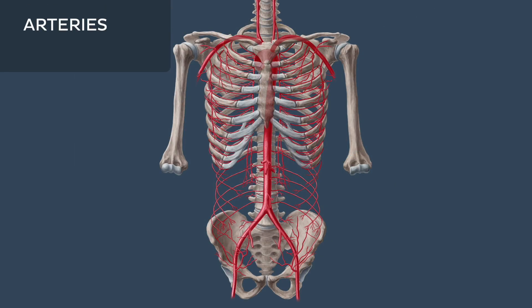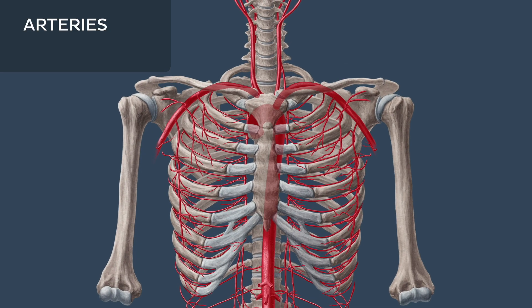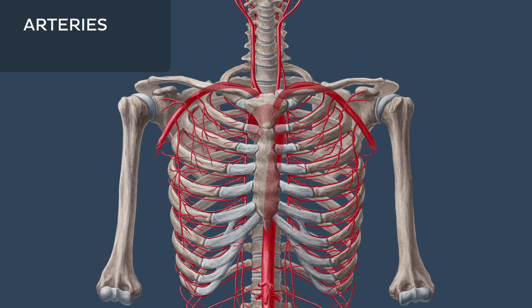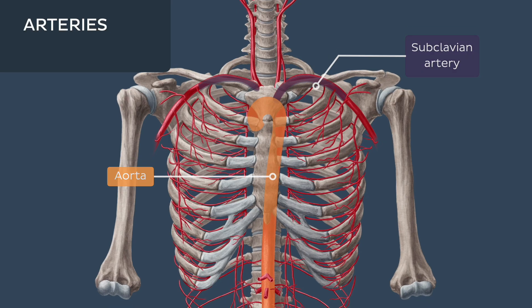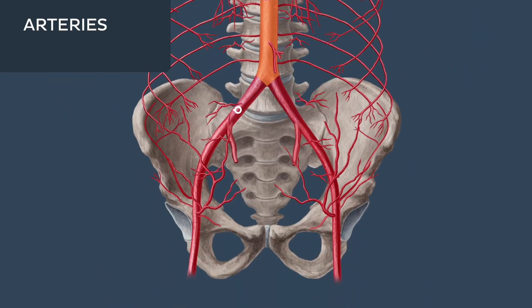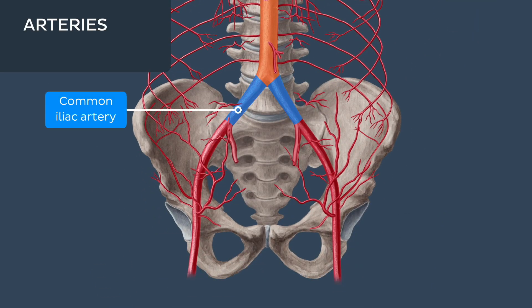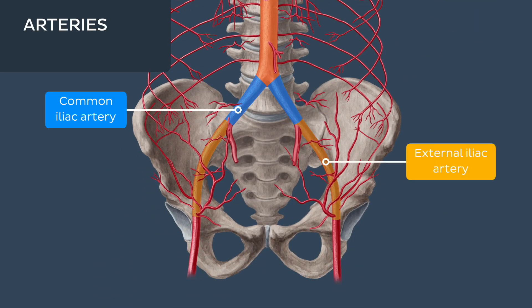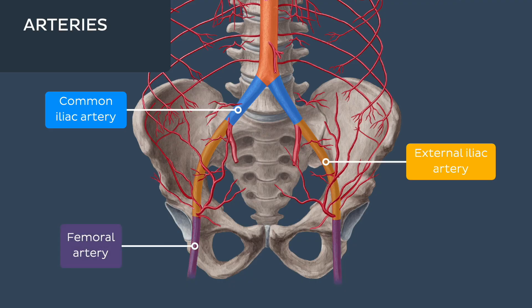The arterial supply of the abdominal wall stems from a number of parent arteries, namely the aorta, the subclavian artery, the common iliac and external iliac arteries, and finally the femoral artery.